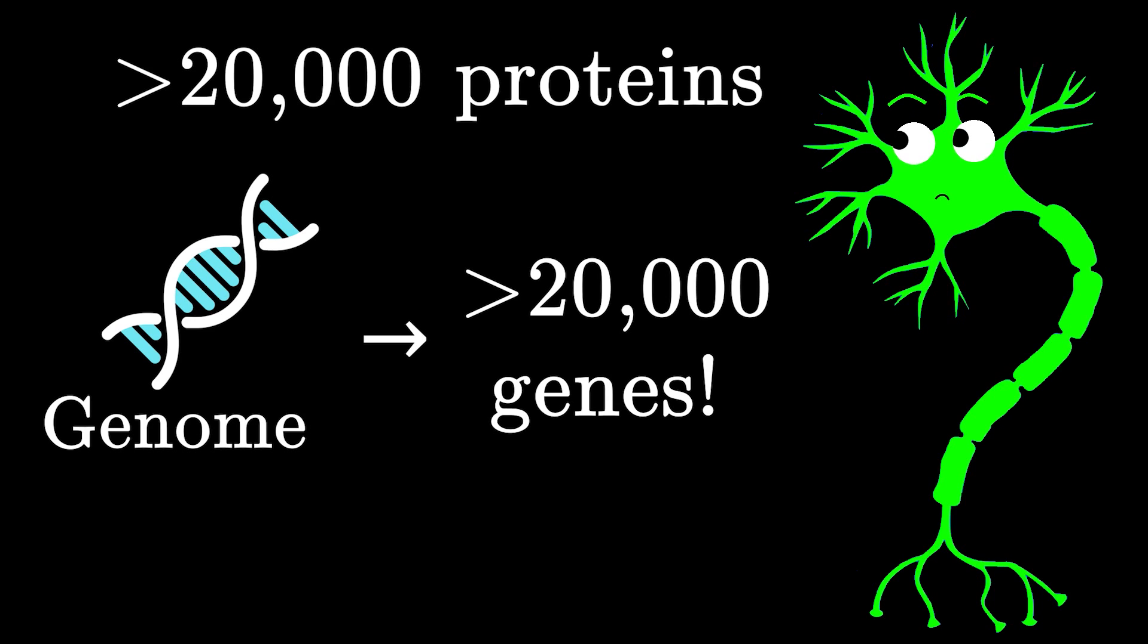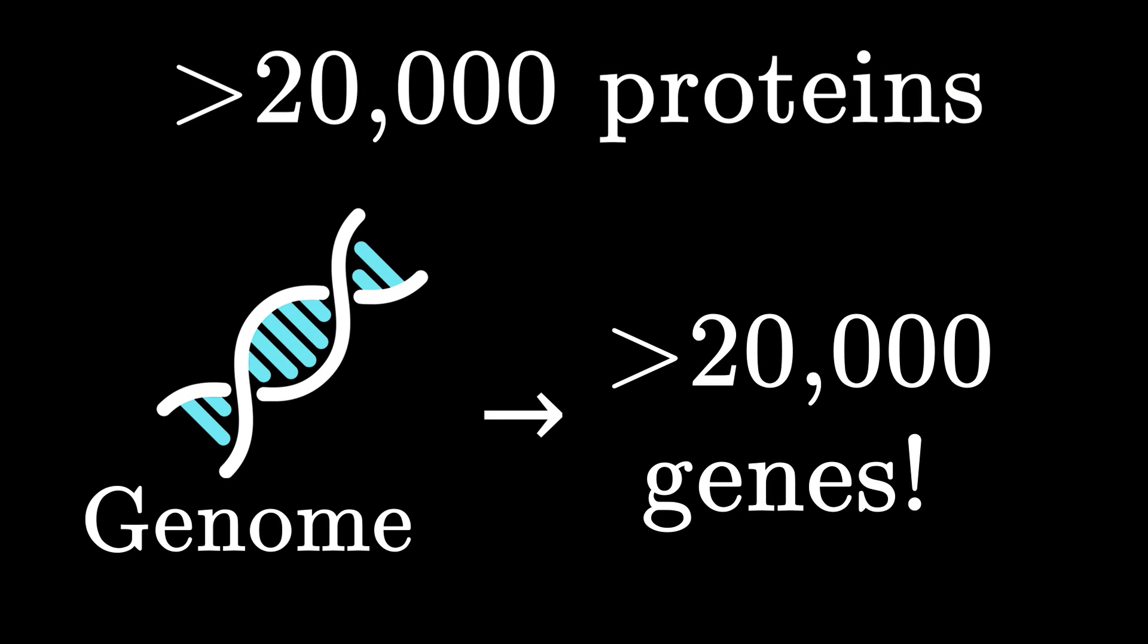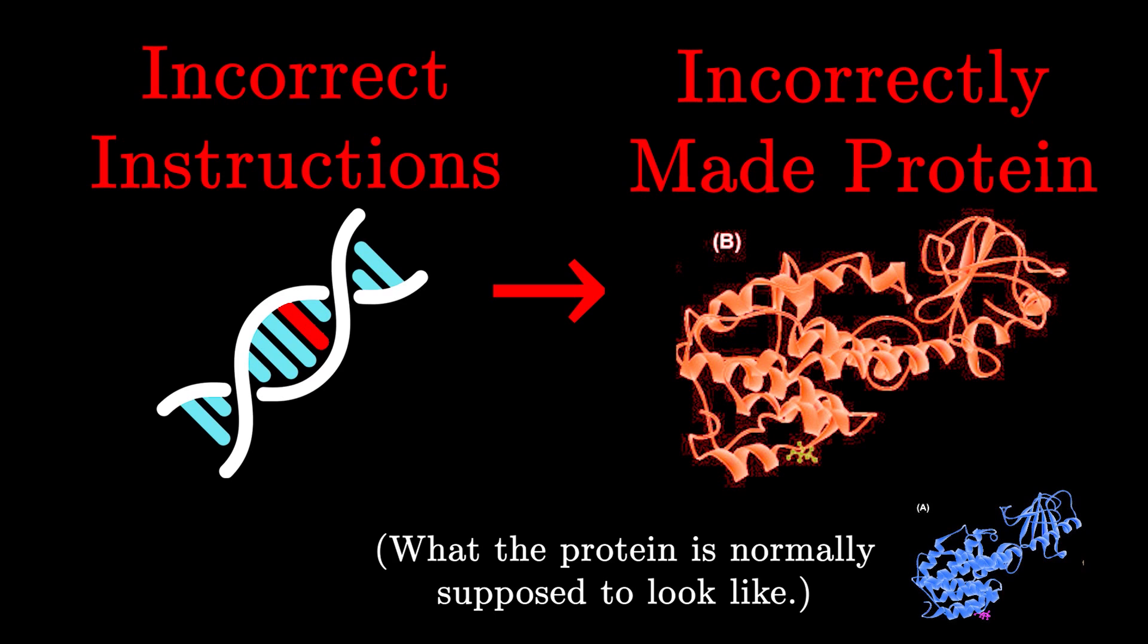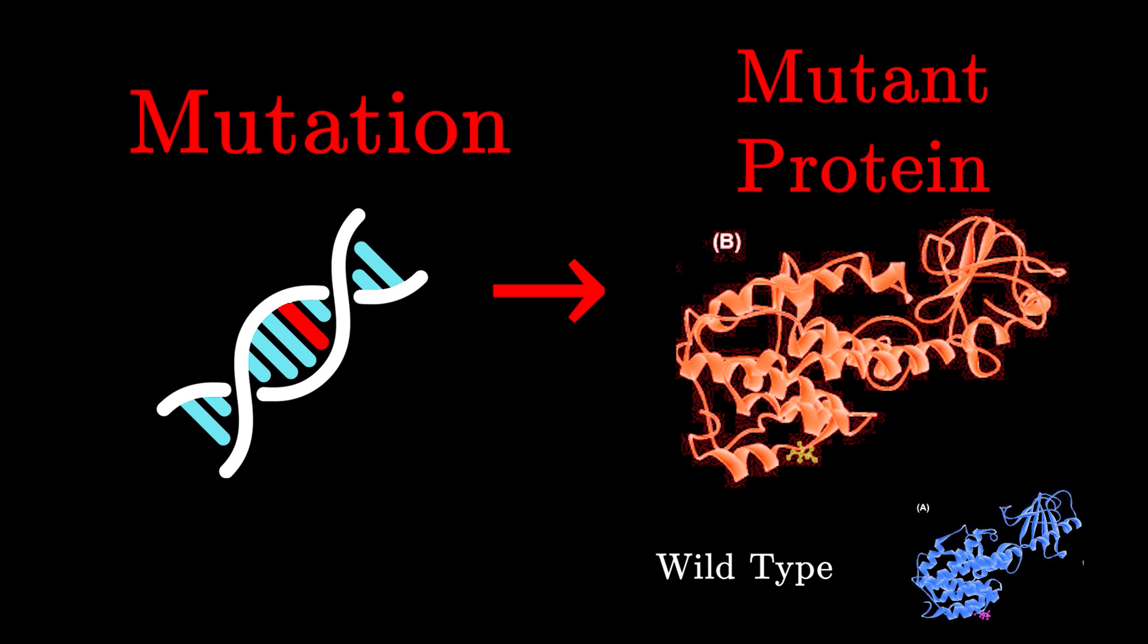Now, if you truly understand this concept, then it would make sense to you that if, for some reason, something was wrong with the gene, then it's possible that the respective protein would not be formed correctly, potentially leading to health issues. This is what scientists refer to as a mutation.